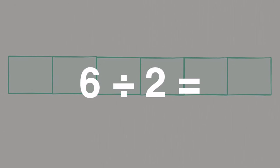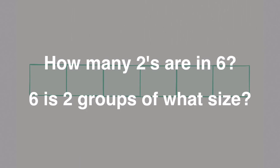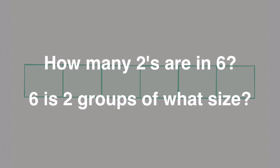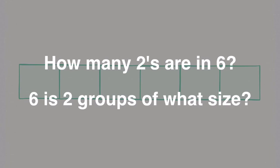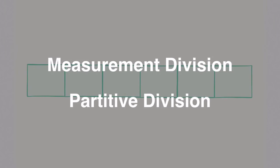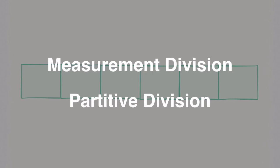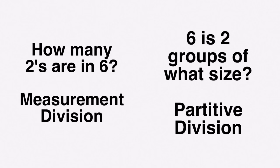There are really two different ways to look at every division problem. For 6 divided by 2, we can ask how many 2's are in 6 — we found 3 groups of 2. We can also ask: 6 is 2 groups of what size? — and we saw 3 in each of the 2 groups. These two ways of thinking about division are called measurement division and partitive division. The 'how many 2's are in 6' approach is measurement division — we're measuring out how many of a given amount are in the whole. '6 is 2 groups of what size' is partitive division — we have the whole and we're looking at the size of each group.